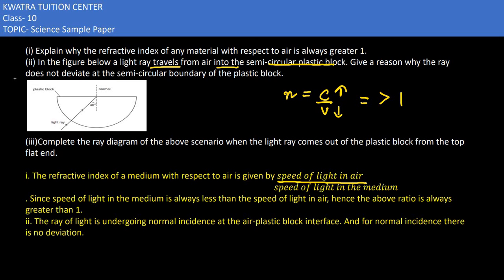So what happens in the third one is the complete ray diagram of the above scenario when the light ray comes out of the plastic block from the top flat end. So it would refract. How will it refract? It will bend away from the normal.